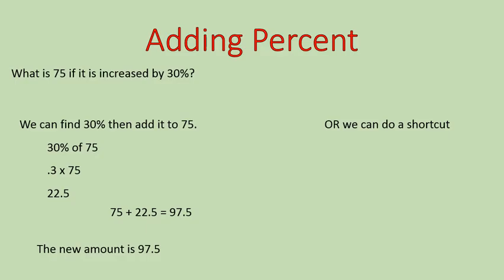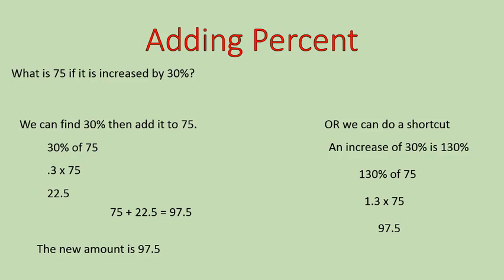There's a bit of a shortcut way that you can do it, and that's to remember what percents mean. 75 is the original amount — it's the full amount — so that is 100%. An increase of 30% would mean I am actually finding 130% of 75. If this is too complicated and you're not understanding this, you can stick with the first method. If you're a little bit more advanced and want to try this out, go ahead. So 130% of 75 would be written as 1.3 times 75, and you'll get the same answer: 97.5. I'm going to show you both methods for all the word problems — both ways will get you the same exact answer.